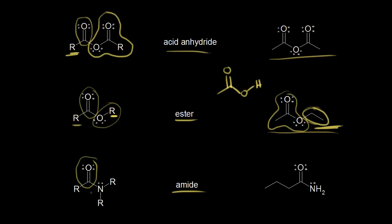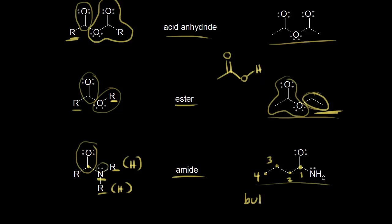Now we have a carbonyl, and notice we have a nitrogen right next to the carbonyl carbon — a nitrogen directly bonded to the carbonyl carbon with a lone pair of electrons on the nitrogen. That's an amide functional group. The R groups could be hydrogens or alkyl groups, so there are lots of different examples of amides. For the example on the right, the carbonyl carbon gets number one, then two, three, and four — so a four-carbon amide would be butanamide.